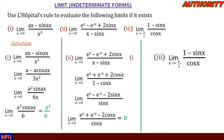For the last one: lim as x approaches π/2 of (1 - sin(x)) / cos(x). Plugging in π/2: sin(π/2) = 1, so the numerator is 1 - 1 = 0; cos(π/2) = 0, so we have 0/0. We differentiate: the numerator gives -cos(x) and the denominator gives -sin(x).